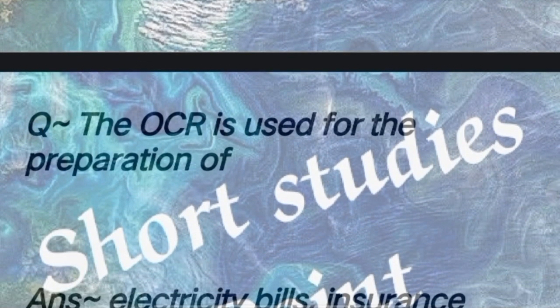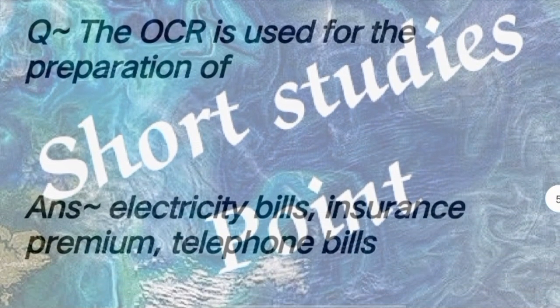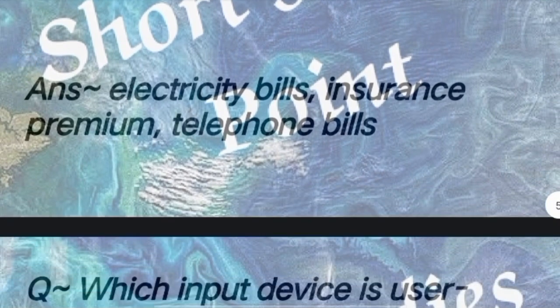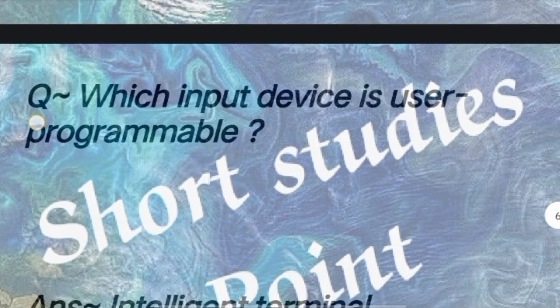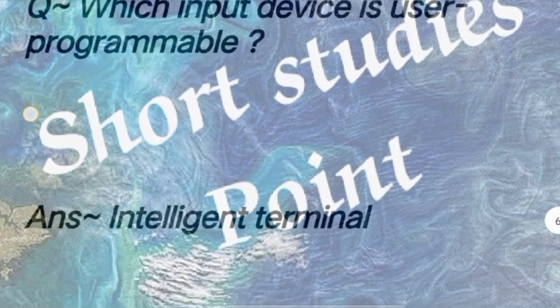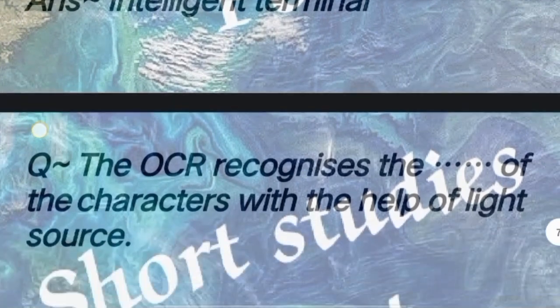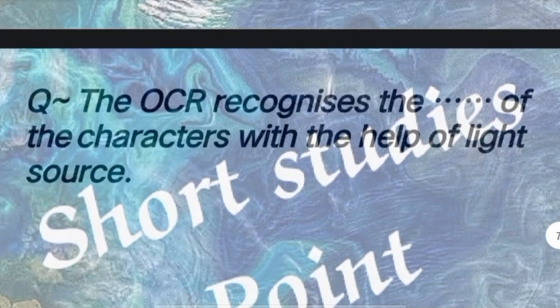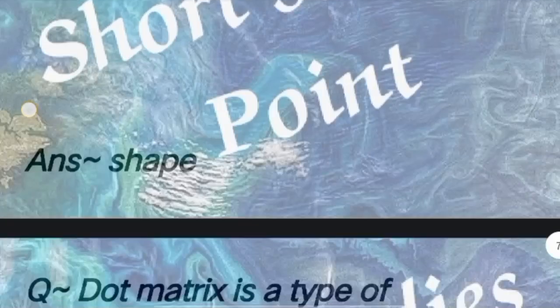Next question: OCR is used for the preparation of? Answer: Electricity bills, insurance premiums, telephone bills. Next question: Which input device is user programmable? Answer: Intelligent terminal. Next question: OCR recognizes the shape of characters with the help of a light source sensor.